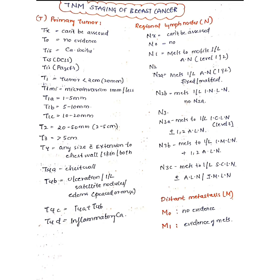In T1, the tumor is less than 2 centimeters (20 mm) in size. T1 is further divided into four substages: T1mi is micro-invasion of 1 mm or less; T1a is 1 to 5 mm; T1b is 5 to 10 mm; and T1c is 10 to 20 mm.